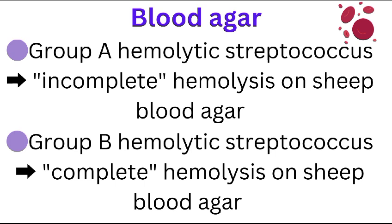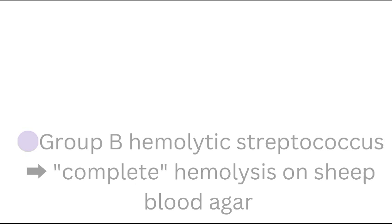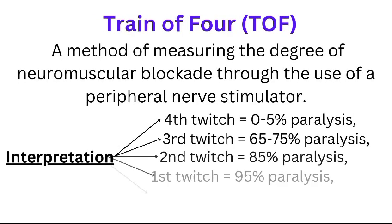Group A hemolytic streptococcus causes incomplete hemolysis on sheep blood agar, while group B hemolytic streptococcus leads to complete hemolysis on sheep blood agar.